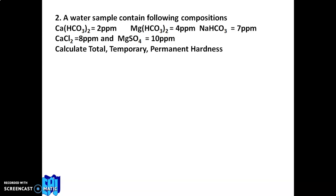Next example: a water sample contains — Ca(HCO₃)₂ = 2 ppm, Mg(HCO₃)₂ = 4 ppm, NaHCO₃ = 7 ppm, CaCl₂ = 8 ppm, MgSO₄ = 10 ppm. Calculate total, temporary, and permanent hardness.